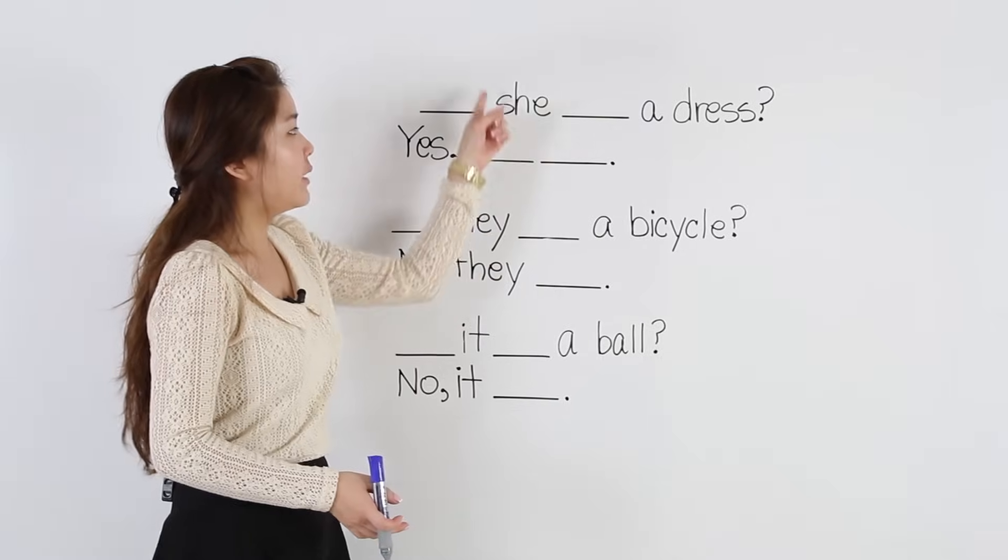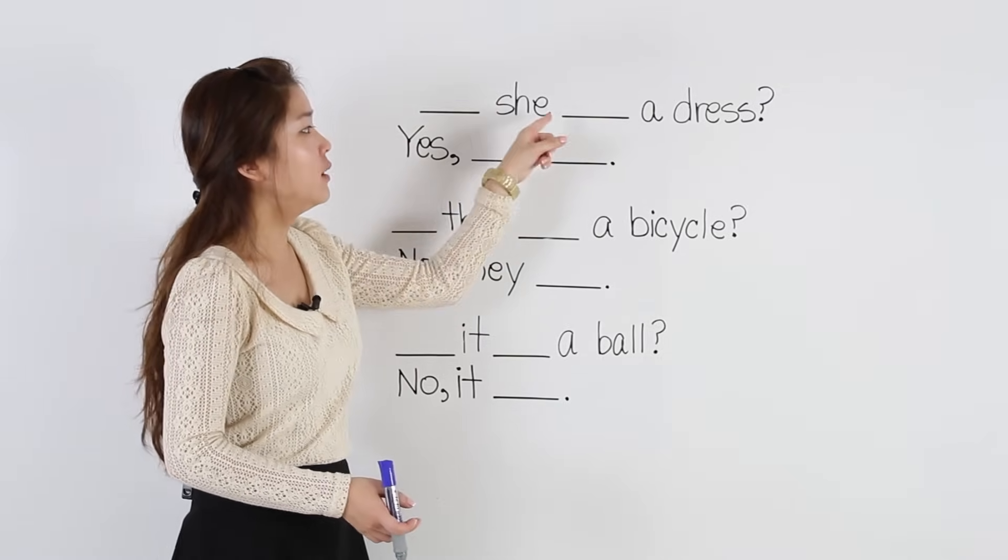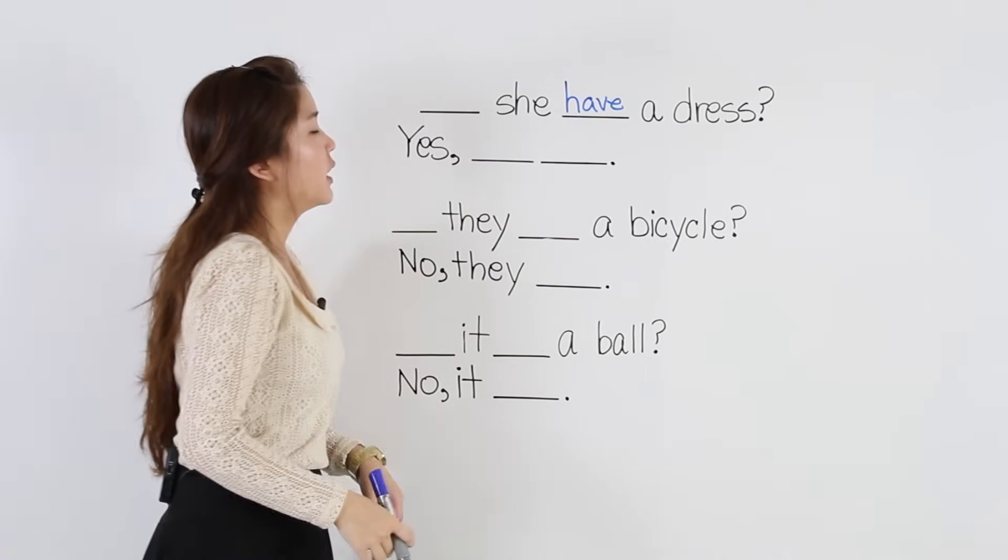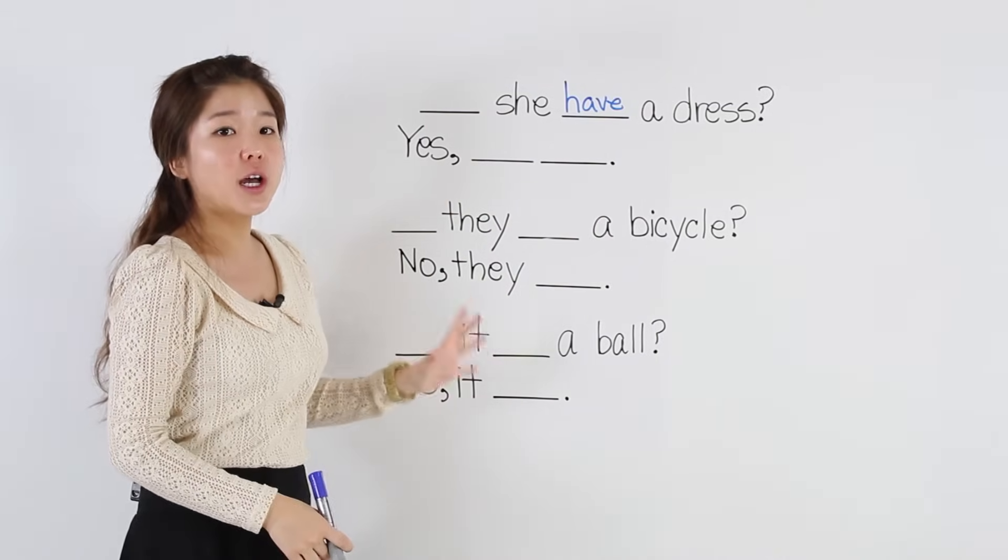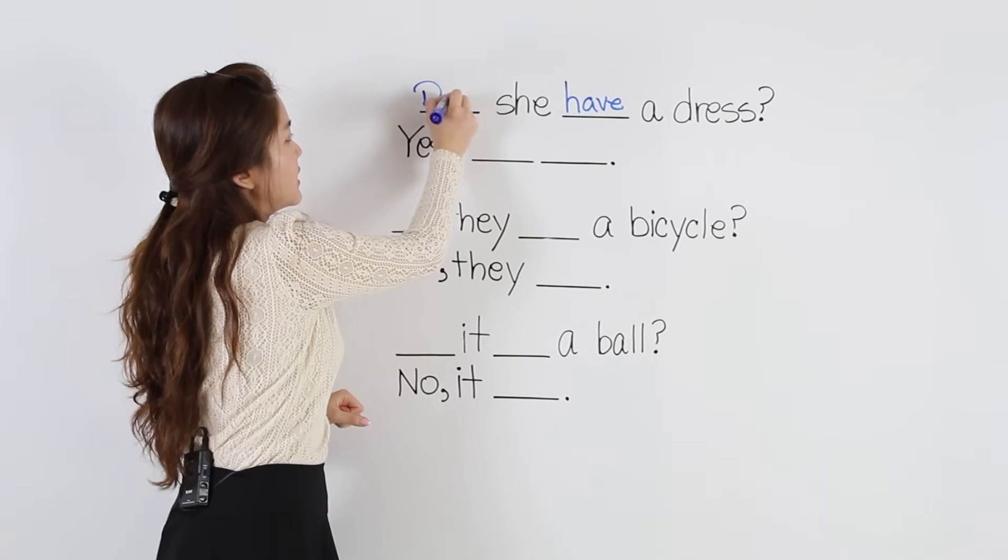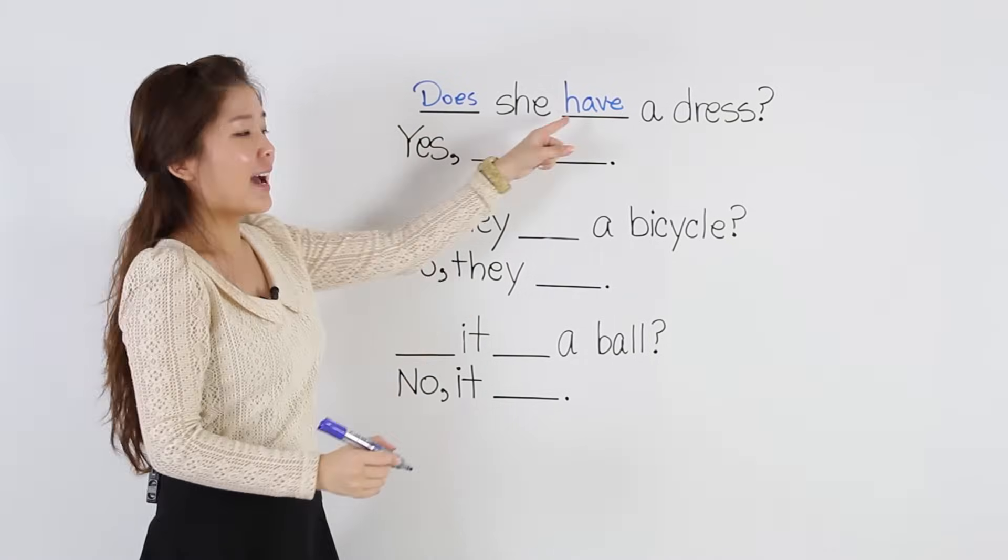Okay, we have she. Well, remember for all questions, we use have. In the front, should we use does or do? The answer is does. Does she have a dress?